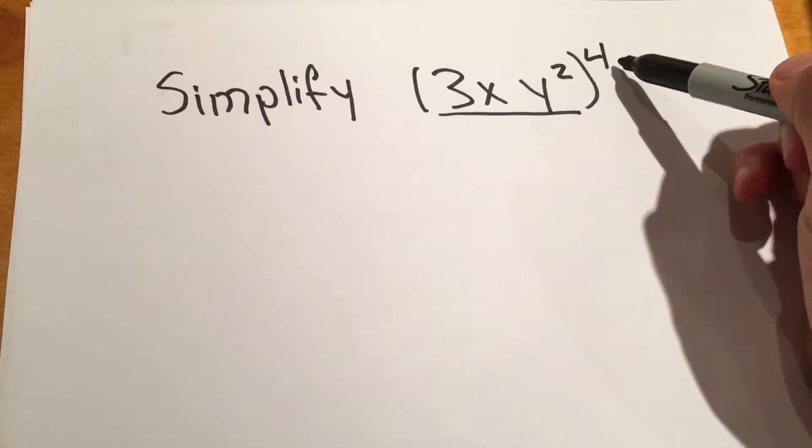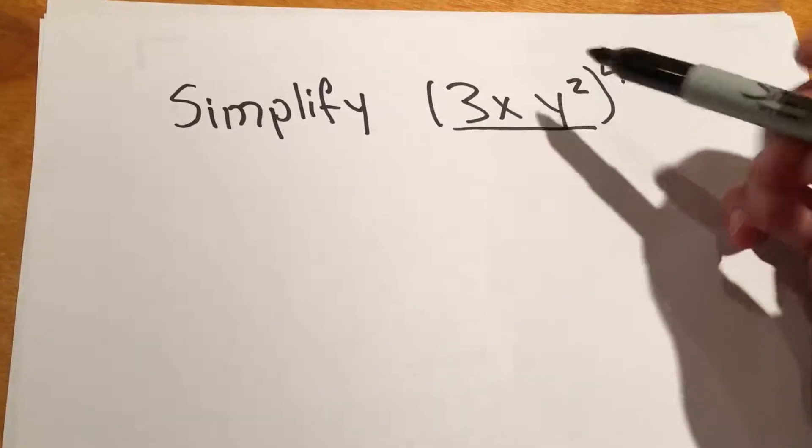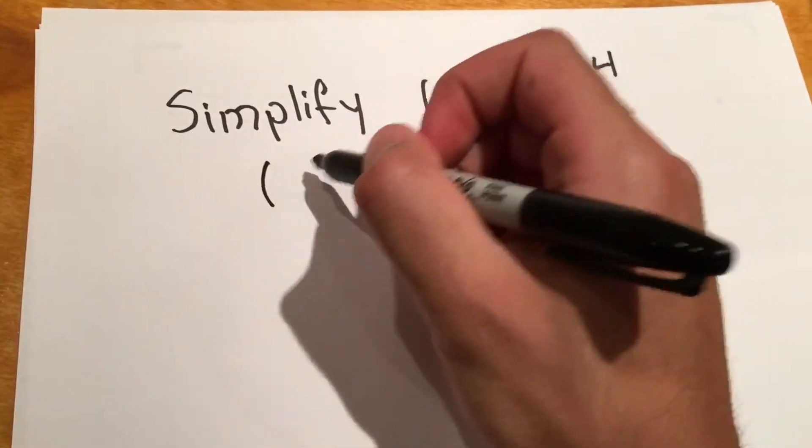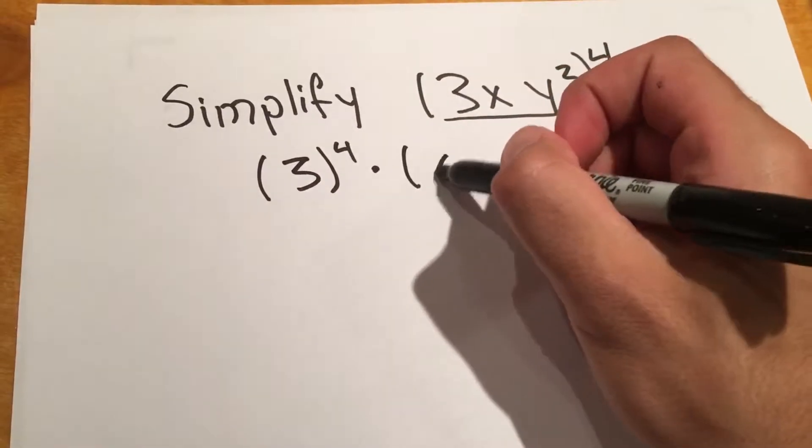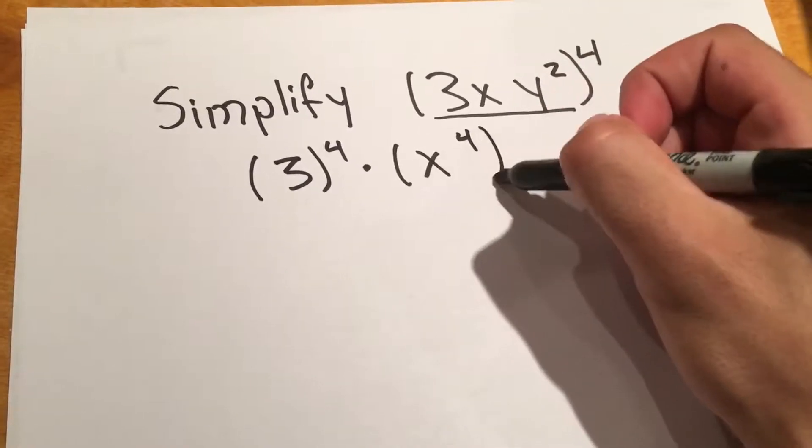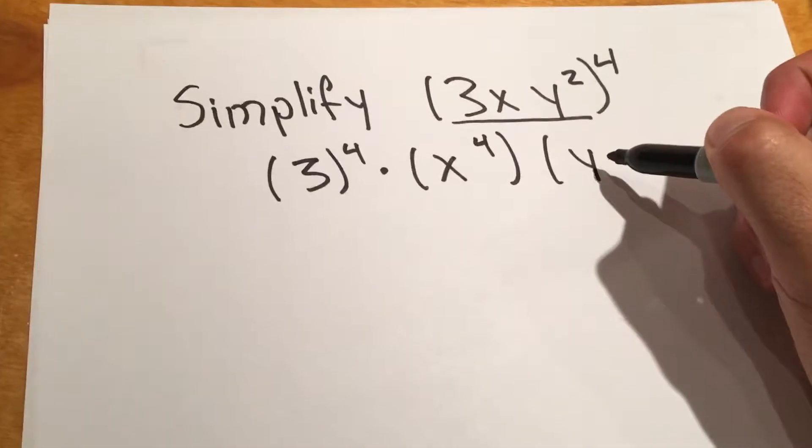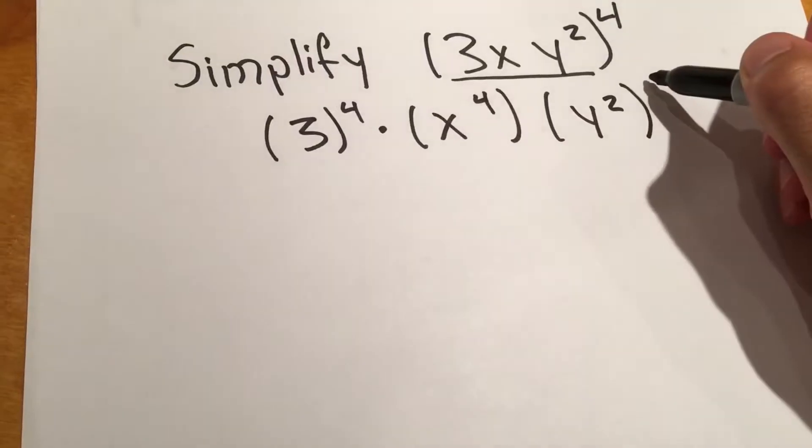We can just apply this exponent to each of these terms. So it will look like 3 to the 4th times x to the 4th and then y squared also to the 4th.